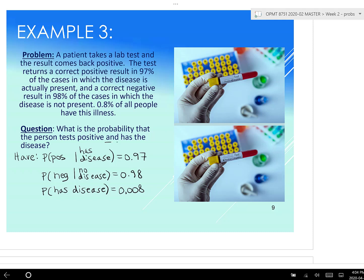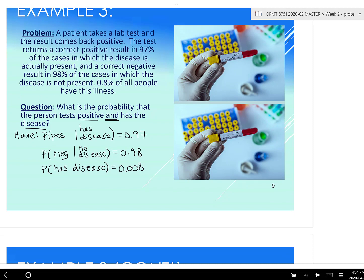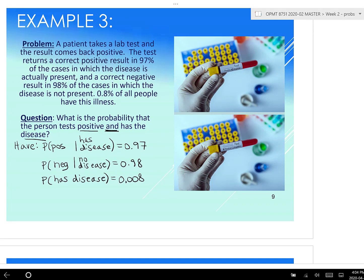So now, what do we want? We want one of the ands. We want the probability of positive and disease. Well, we have positive given has disease. We have probability of has disease. Probability of positive and disease is going to be the probability of positive given disease times by the probability of disease.